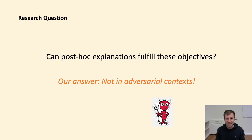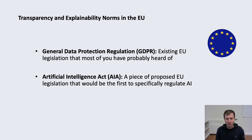Before we go into the details of why this is the case, let us situate our research question in the context of European Union law. In the European Union, there are two main legislations relevant for automated decision-making systems. One is the GDPR that many of you have probably already heard of. Another is the so-called Artificial Intelligence Act, a piece of recently proposed legislation that would be the first to specifically target artificial intelligence systems in the EU. I am now going to give a very quick overview as to whether explanations are a requirement according to European Union law. For the details, please have a look at our paper.